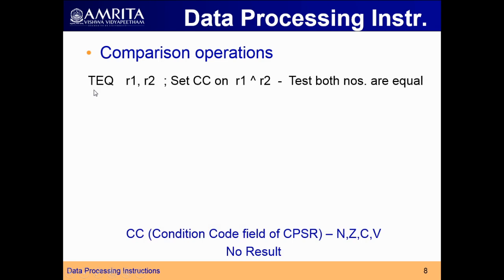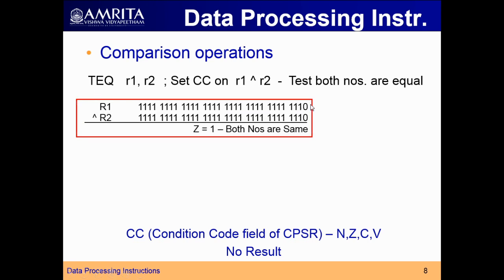Next is TEQ — test for equivalence. TST was used for testing whether a particular bit is 1 or 0. TEQ is used for testing whether two register values are equal. The operation is R1 XOR R2. Since 1 XOR 1 equals 0 and 0 XOR 0 equals 0, whenever both numbers are equal, the result will be 0. Example: R1 equal to 0xFFFFFFFE, R2 also equal to 0xFFFFFFFE. After performing TEQ (R1 XOR R2), since both are equal, the Z flag will be set.